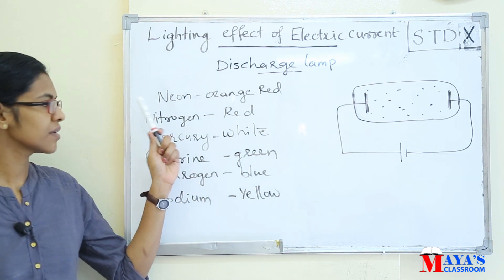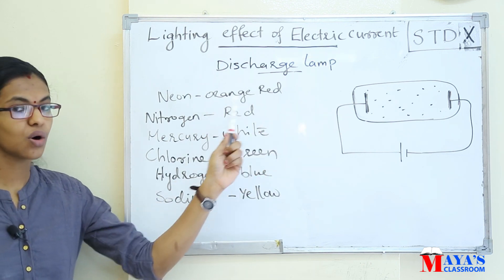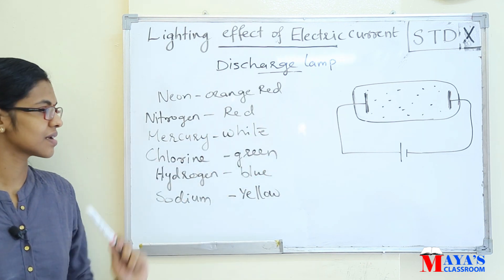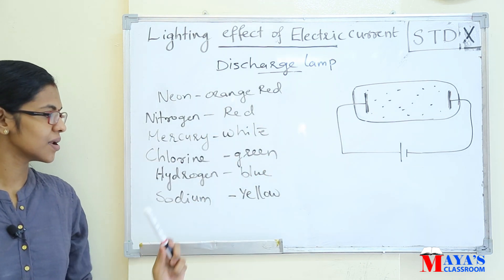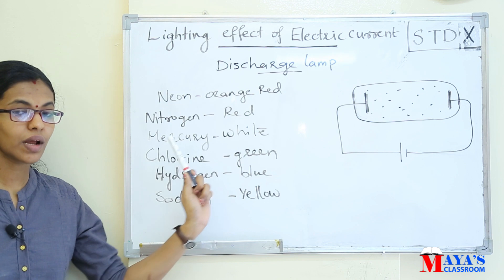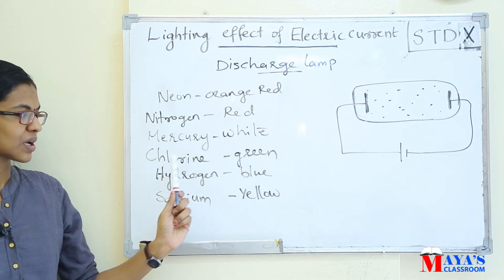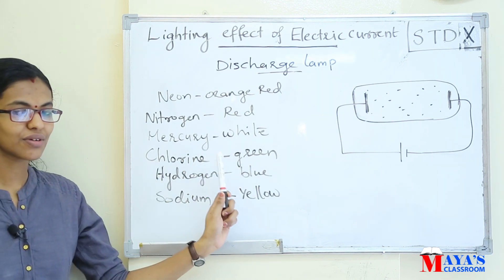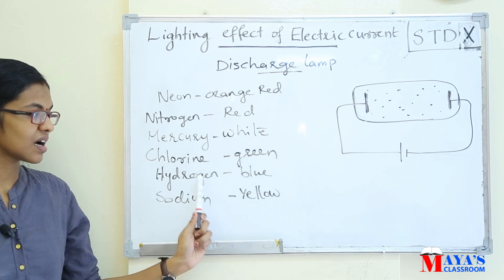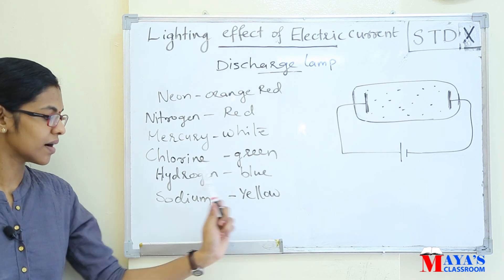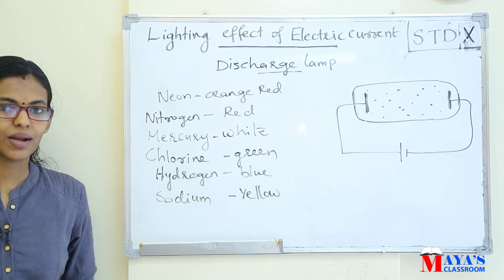Different gases produce different colors of light. In a neon gas discharge lamp, the light is orange-red. Other gases can produce white light, green light, blue light, and yellow light depending on the gas used.